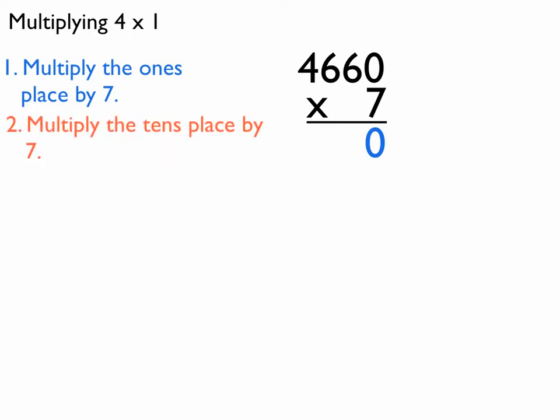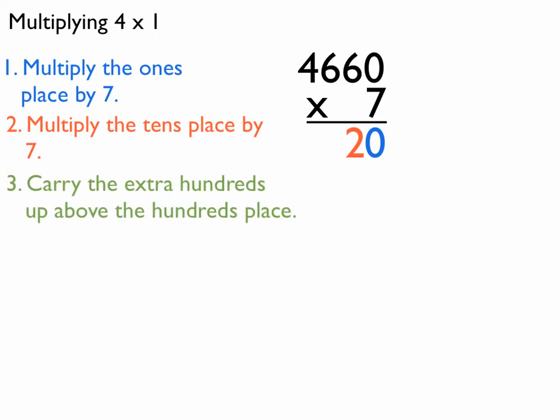Multiply the tens place by 7. 7 times 6 makes 42. I put the 2 right there and carry the extra hundreds above the hundreds place, which is 4 in this case.